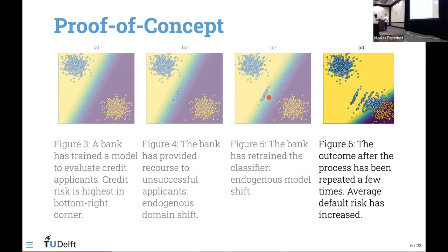In our experiments we repeat this procedure a number of times: recourse is implemented, the model is retrained. We end up with this highly exaggerated image for illustrative purposes, but the proof of concept shows that the group of borrowers ultimately receiving credit is much riskier — the average default risk has increased. So there are costs generated through the application of recourse that we would like to avoid.